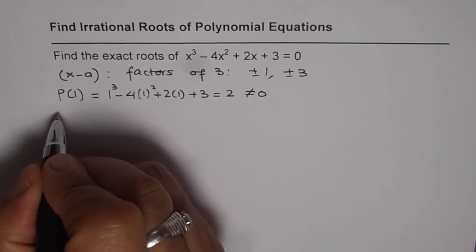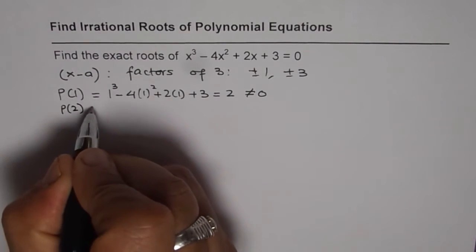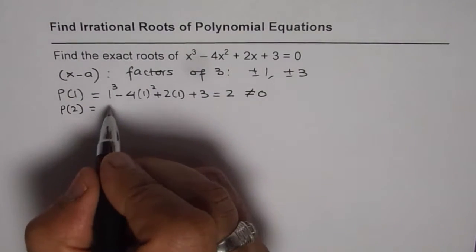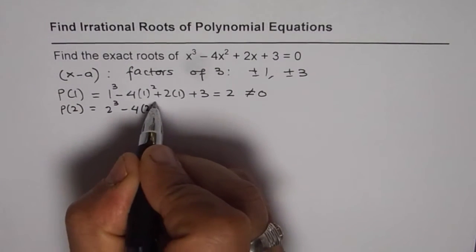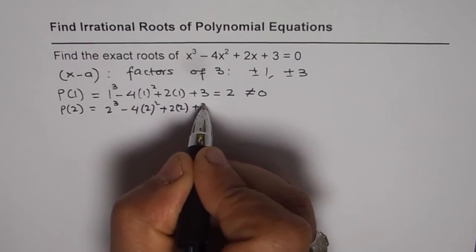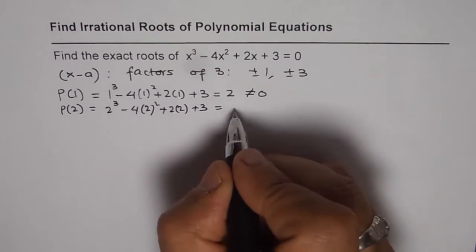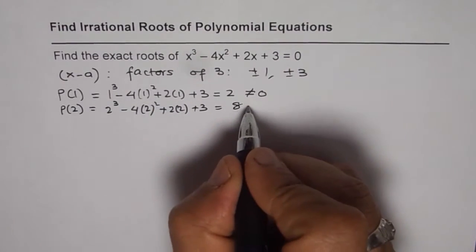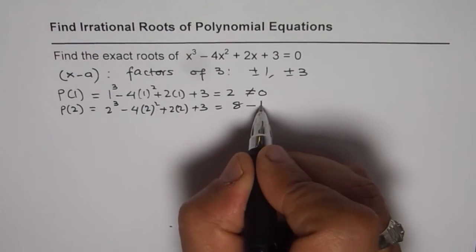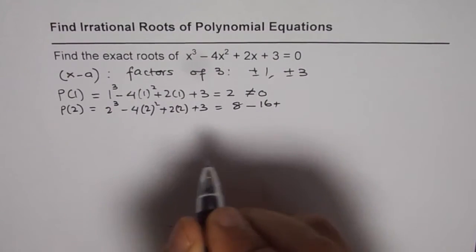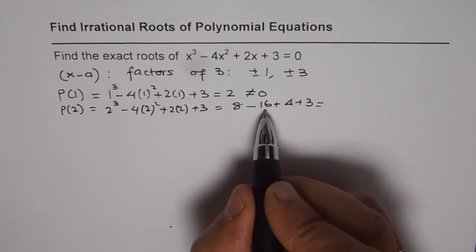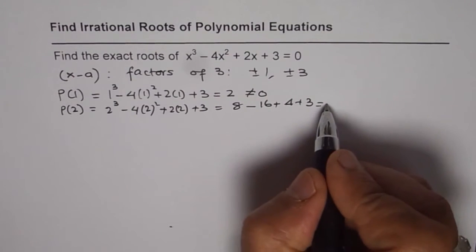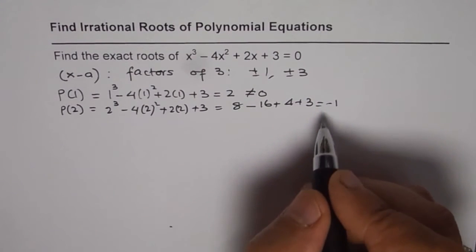We will try the value 2. So 2³ - 4(2²) + 2(2) + 3. In this case, 2³ is 8, so 8 - 4(4) + 2(2) + 3 = 8 - 16 + 4 + 3. That equals 8 - 16 = -8, and -8 + 7 = -1. So this is also not 0.